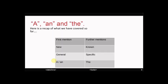So here's a recap of what we've covered so far. We've got first mention and further mentions. The difference between a and an and the. We've got new with a and an and known with the. And then general with a and an and specific with the. So that's what we've covered so far. I hope that's quite clear of why nouns can transition from a and an to the. Is it just that simple? I'll ask the question again. Unfortunately, the answer is no.